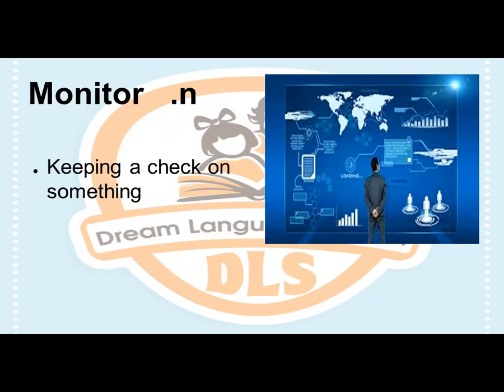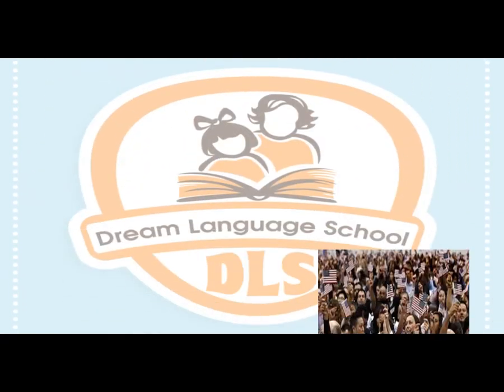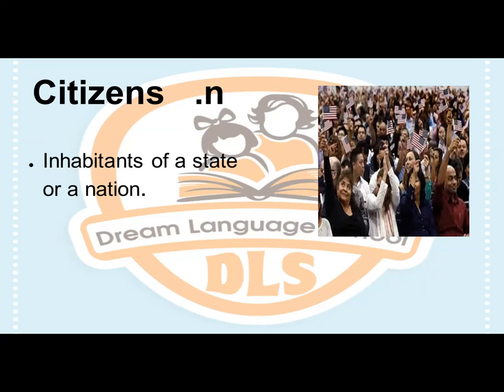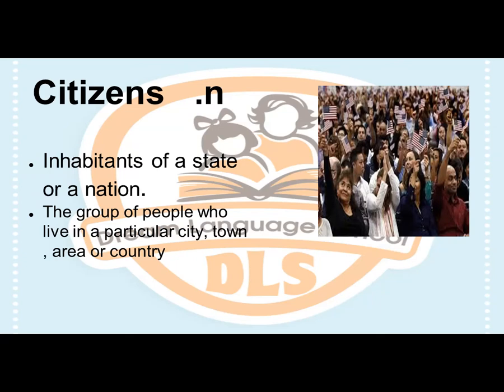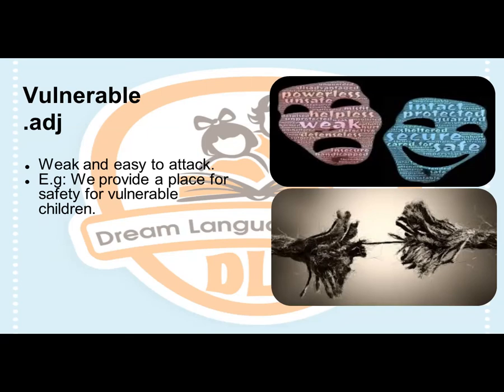Monitor — it means keeping a check on something. Example: International monitors are keeping watch on the election process. Citizens. Noun. Inhabitants of a state or nation — the group of people who live in a particular city, town, area, or country. Vulnerable. Adjective. It means weak and easy to attack. Example: We provide the place for 64 vulnerable children.